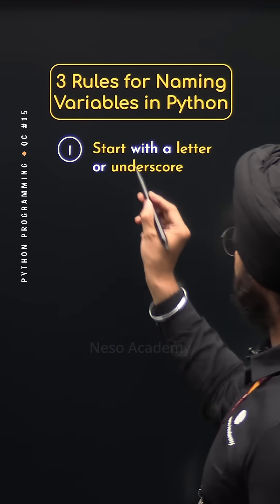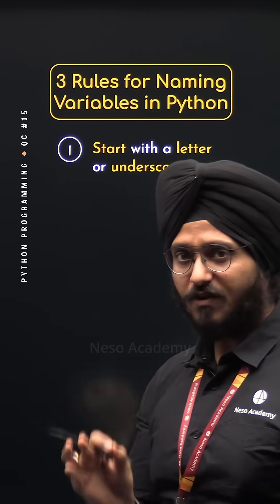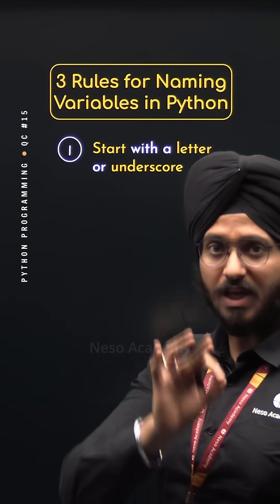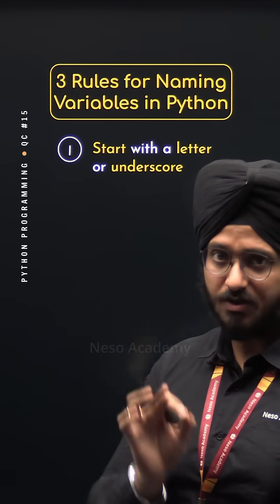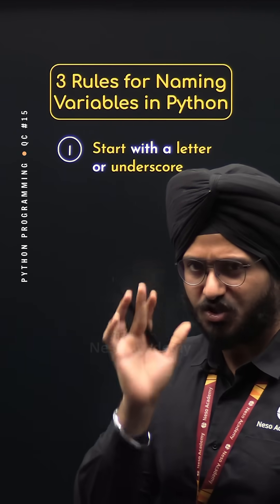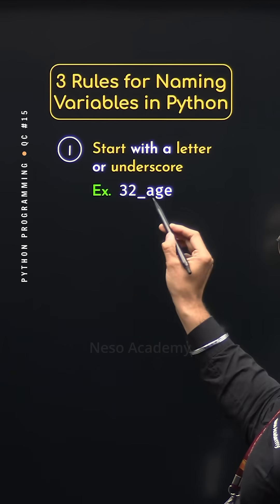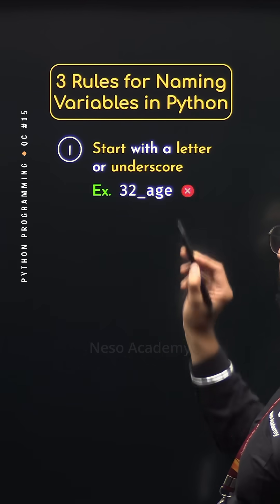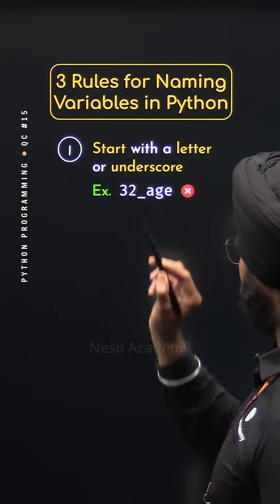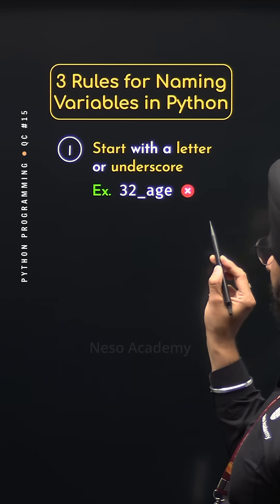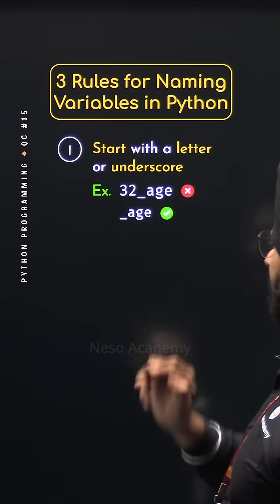Rule number one: start with a letter or an underscore. Always begin your variable names with a letter or an underscore. Don't begin with a digit. For example, this variable name is invalid because it begins with a digit. On the other hand, this variable name is perfectly valid.